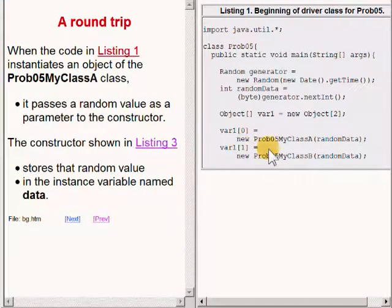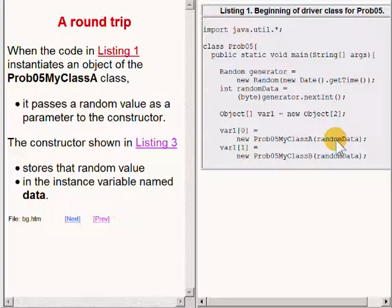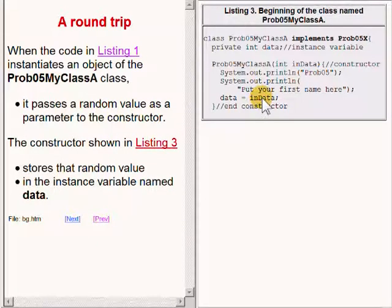When the code in the main method instantiates an object of this class, it passes a random value as a parameter to the constructor. That constructor, now showing on the upper right of your screen, stores that random value in the instance variable named data.